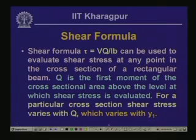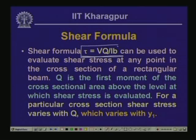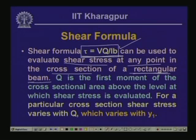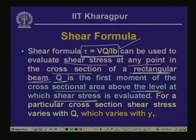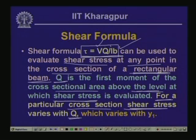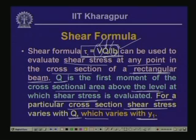The shear formula tau = VQ/IB can evaluate shear stress at any point in the cross section of a rectangular beam. Q is the first moment of the cross-sectional area above the level at which we seek the shear stress. For a particular section, Q varies with y1 while V, I, and B remain constant, so the shear stress distribution varies along the depth.